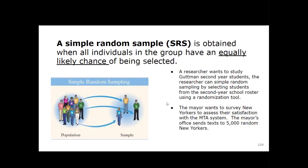For simple random sampling you want to avoid that probability change. This is the gold standard — the best way to sample — but it's also the most expensive and difficult to coordinate. A couple of examples: a researcher studying Guttman second-year students can simply random sample by selecting students from the second-year school roster using a randomization tool. The mayor wanting to survey New Yorkers about MTA satisfaction could pick 5,000 random people across all five boroughs to send texts to — that would be simple random sampling. It's the gold standard because it is so unbiased, especially when you introduce technology to help select people.